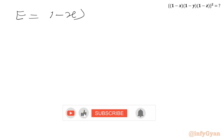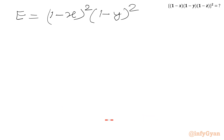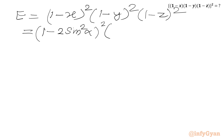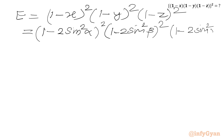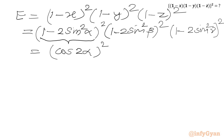Now we evaluate the required expression E = (1 − x)²(1 − y)²(1 − z)². We calculate 1 − x = 1 − 2 sin²α, 1 − y = 1 − 2 sin²β, and 1 − z = 1 − 2 sin²γ. Using the cosine double angle formula, these equal cos 2α, cos 2β, and cos 2γ respectively, each squared.